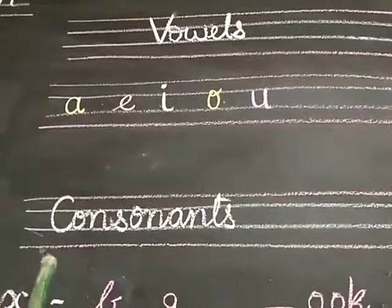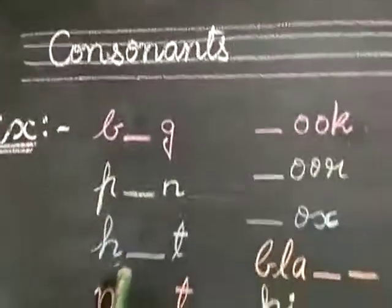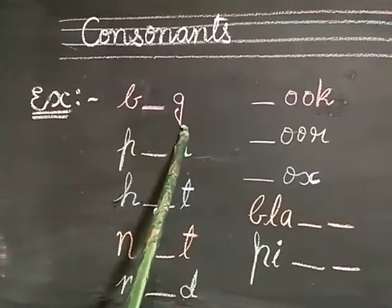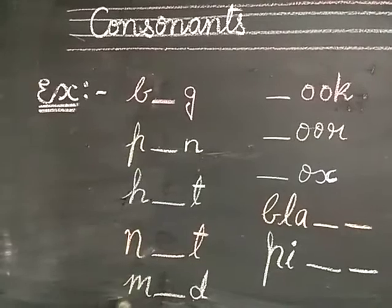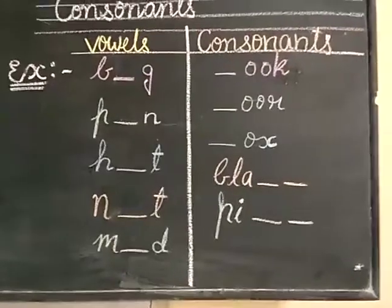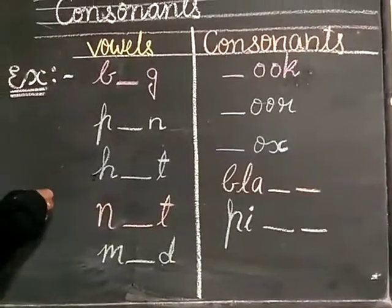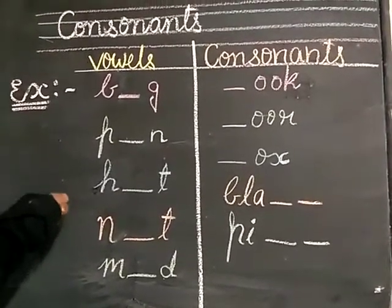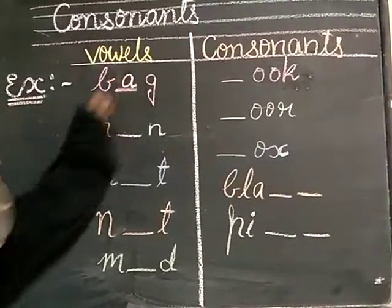Now, example for vowels and consonants. Here few examples are B dash G. Now, you have to fill this fill-ups with vowels. So, you have to fill this fill-ups with vowels. Which word should come here? A, B-A-G, bag.